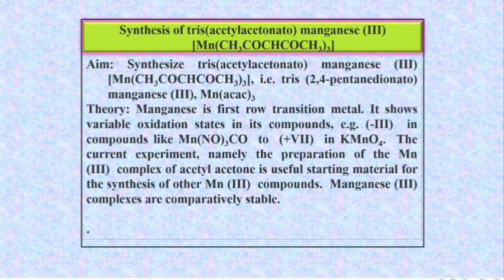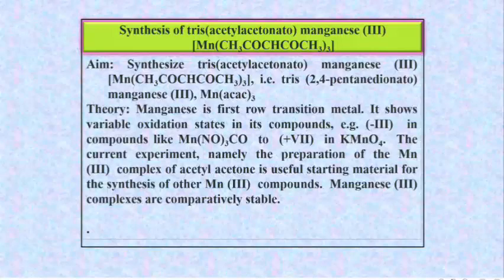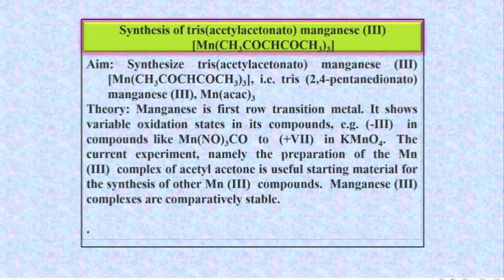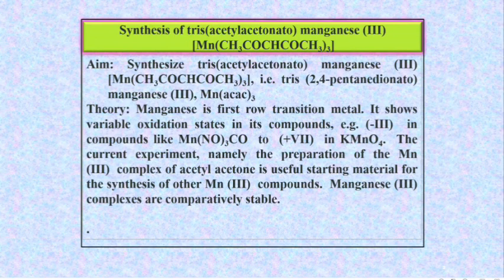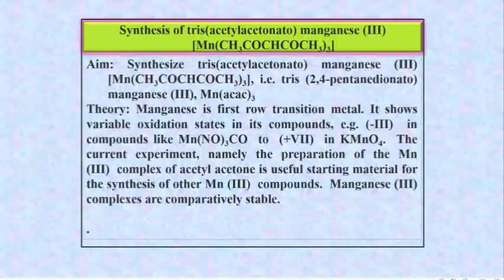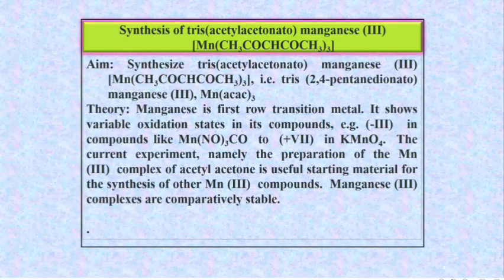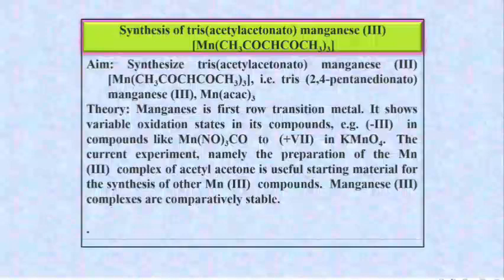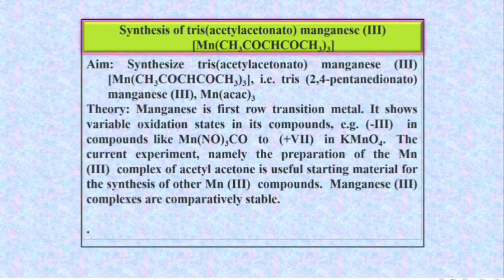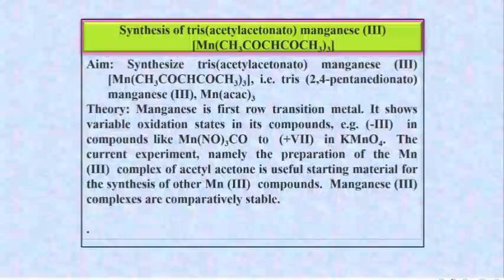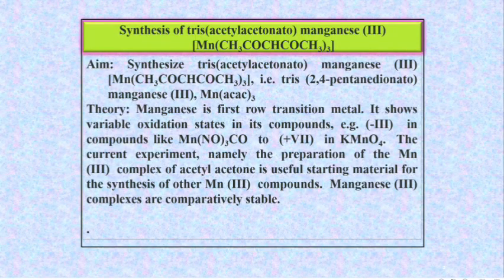Manganese is a first-row transition metal. It shows variable oxidation states in its compounds — for example, minus 3 in compounds like Mn(CO)3 and plus 7 in KMnO4. The current experiment, namely the preparation of the Mn(III) complex of Acetyl-Acetone, is a useful starting material for the synthesis of other Mn(III) compounds. Mn(III) complexes are comparatively stable.